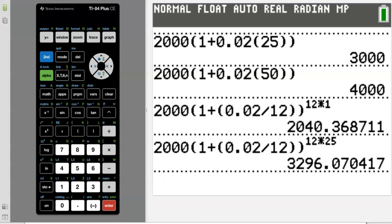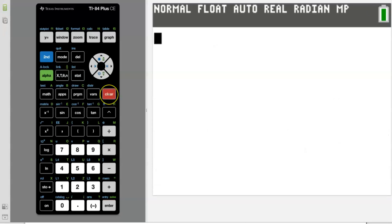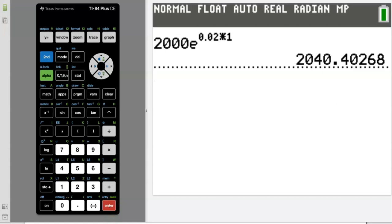Now let's do it for bank C, which uses the number E. Let me clear this out so it's not confusing. For bank C we have 2,000 times the number E. It is not this green one on top of sign. If you look next to the 4, there's an LN button, and above it in blue you should see an E. So we're going to push 2nd and then that LN button. We're going to fill that in with 0.02 times 1 year. Make sure you get 2040 and 40 cents.